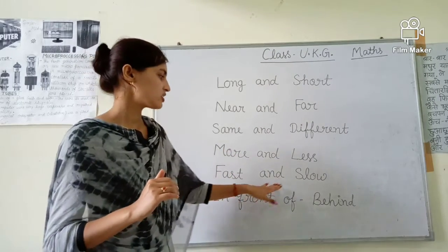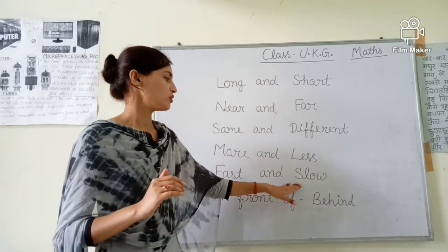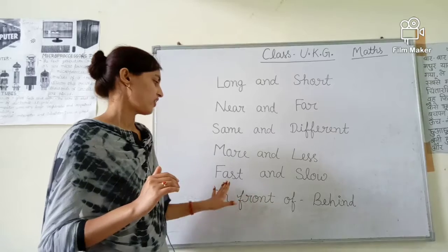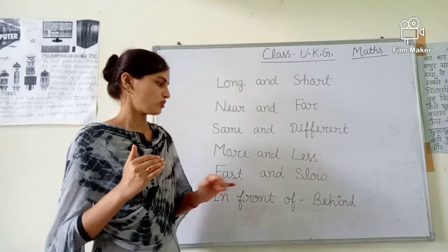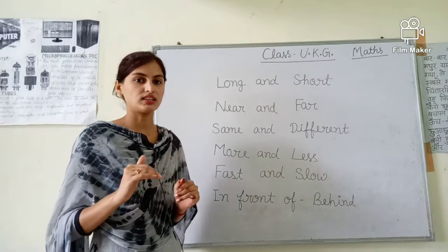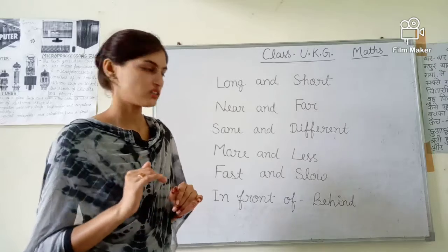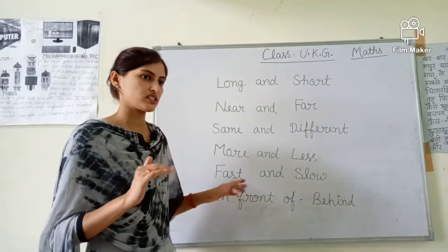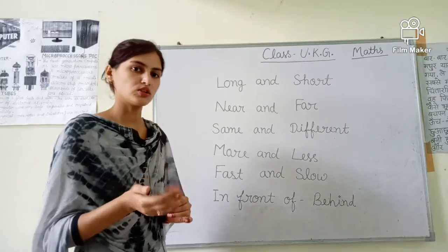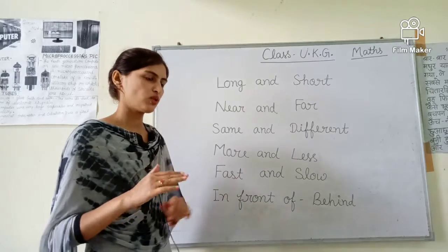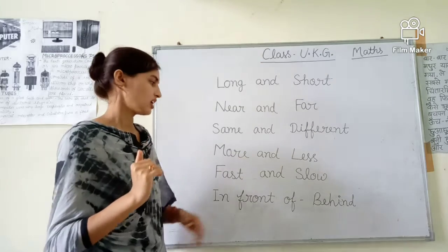Fast and slow. Fast means teez, slow means dheere. The train is very slow. Bike is fast. Cycle is slow. Fast and slow.